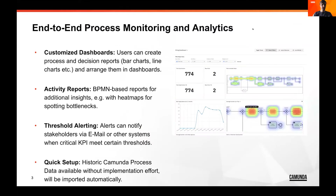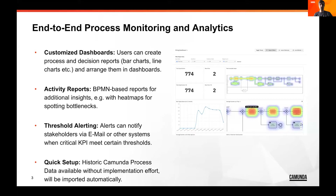When we look at Camunda Optimize as a tool, it's mainly used for end-to-end process monitoring and analytics, which helps you in your process of continuous improvement. It allows you to create your own customized dashboards based on process data, and all different kinds of reports that you can place on these dashboards — simple bar and line charts, but also directly embedding the process diagram with visualizations on top.